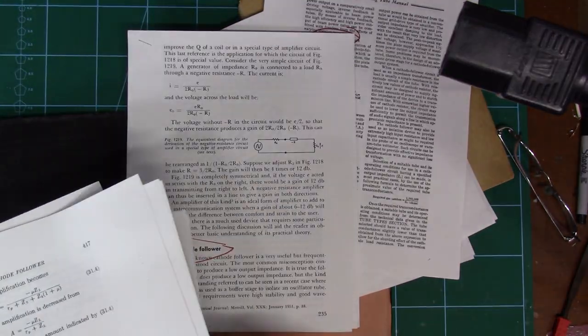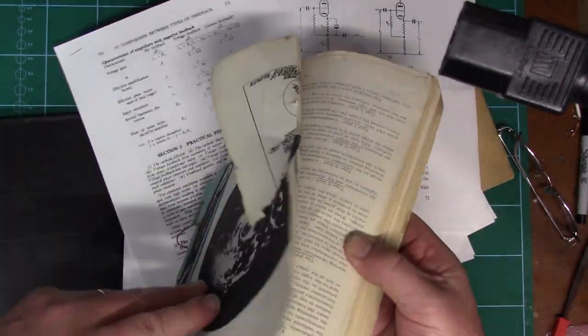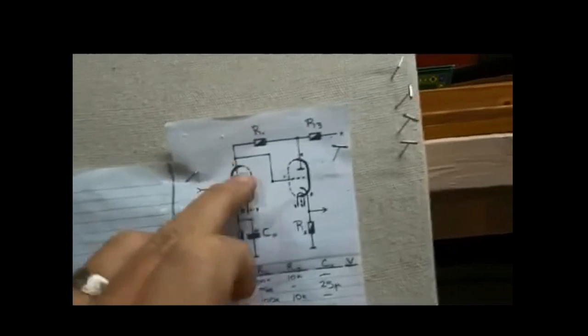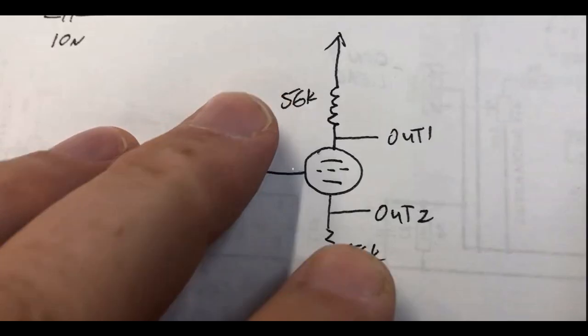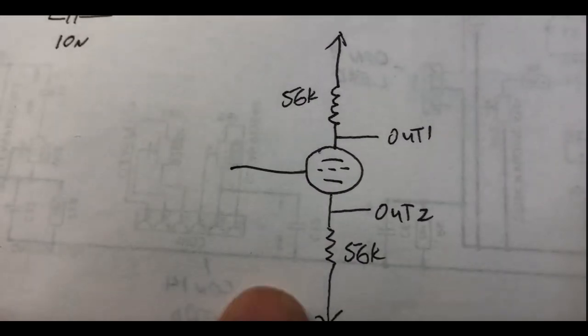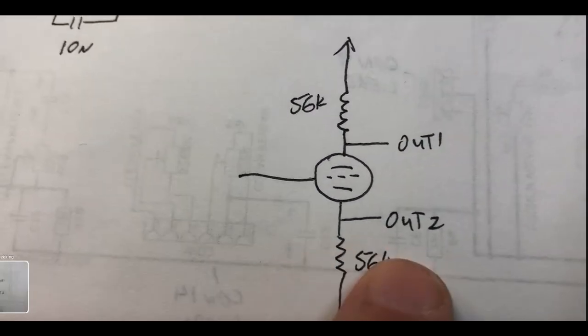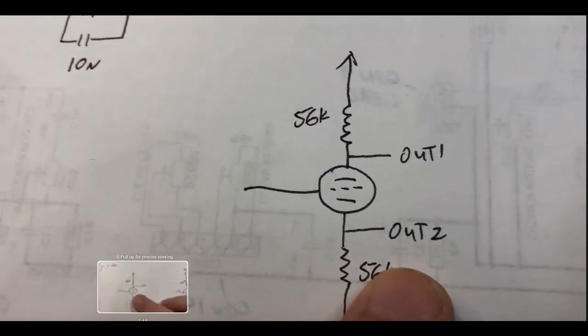So after reading everything I could find on cathode followers, I still didn't have any understanding of what the circuit was supposed to do. I then of course watched a whole bunch of YouTube videos and all I got was all sorts of maths and even more confused because like I said at the beginning, this circuit is usually not understood by anybody on the internet anymore.